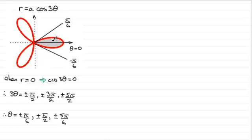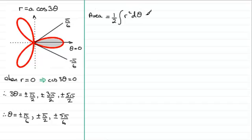Now we only need to find the area of this loop, so my angles would be going from minus pi upon 6 to pi upon 6. The area is given by half the integral of r squared integrated with respect to theta, and the angle will go from minus pi upon 6 to pi upon 6 radians.